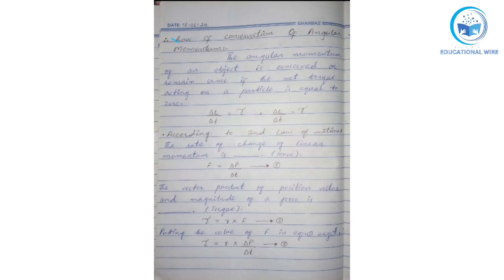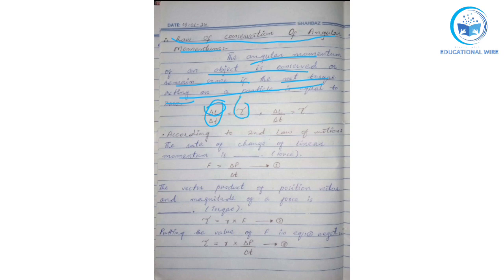Hello everyone, hope you all are doing well. Today we will discuss the law of conservation of angular momentum. This law says that the angular momentum of an object is conserved or remains the same if the net torque acting on a particle is equal to zero. Here, delta L is the symbol for angular momentum, and delta L upon delta t is equal to torque.